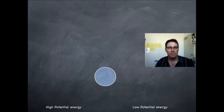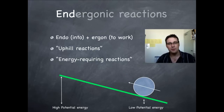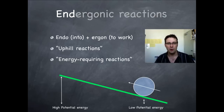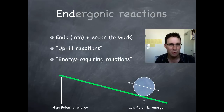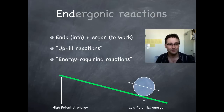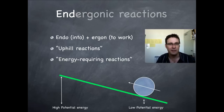On the other hand, if you need to move something in a direction it wouldn't normally go, like in active transport, or if you're going to take small molecules like amino acids and join them together to make a protein, that's not going to happen spontaneously. It won't happen all by itself. It's going to require the input of energy, and that's what an endergonic reaction is. Endergonic means energy in. Some people will call these uphill reactions or energy-requiring reactions, but we're going to call them endergonic.